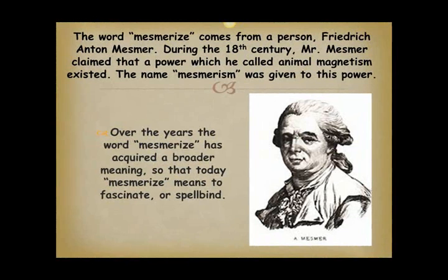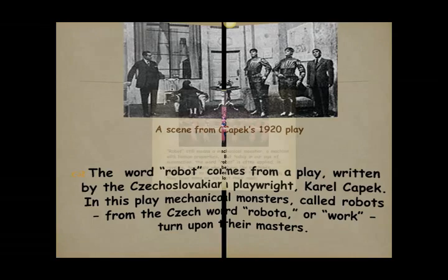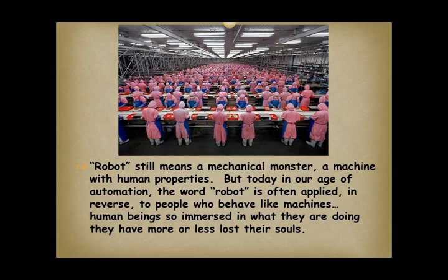The word mesmerize comes from a person, Friedrich Anton Mesmer. During the 18th century, Mr. Mesmer claimed that a power which he called animal magnetism existed. The name mesmerism was given to this power. Over the years, the word mesmerize has acquired a broader meaning, so that today mesmerize means to fascinate or spellbind. The word robot comes from a play written by the Czechoslovakian playwright Karel Čapek. In this play, mechanical monsters called robots — from the Czech word robota, meaning work — turn upon their masters. Robot still means a mechanical monster, a machine with human properties. But today, in our age of automation, the word robot is often applied in reverse to people who behave like machines, human beings so immersed in what they are doing they have more or less lost their souls.